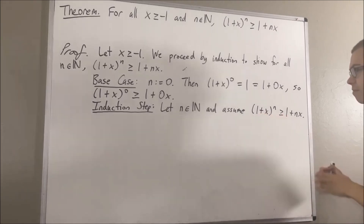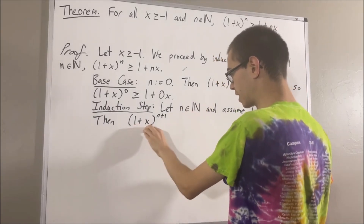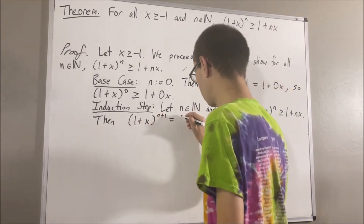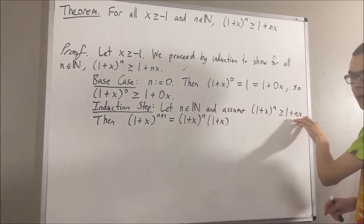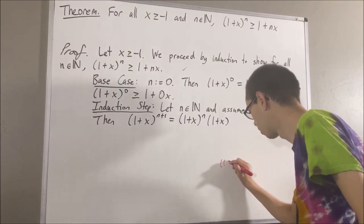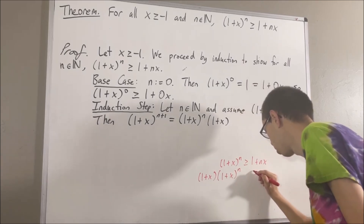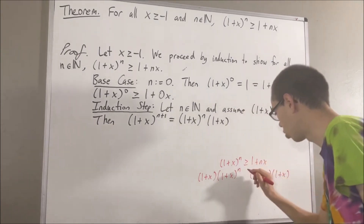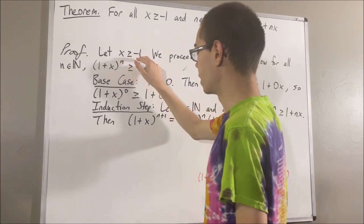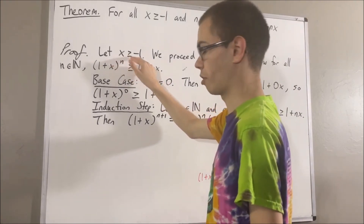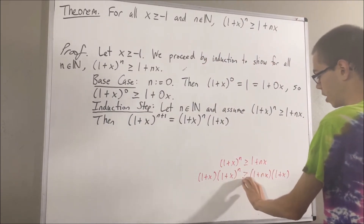So, let me start out by writing the left-hand side. Using our rules of exponents, we know that this equals 1 plus x to the power of n, times 1 plus x. Notice we see 1 plus x to the power of n, so maybe we should use our induction hypothesis. If we take this inequality and multiply 1 plus x on both sides, the sign of the inequality will remain the same. The reason why is because, since x is greater than or equal to negative 1, adding 1 to both sides gives us that 1 plus x is greater than or equal to 0. And because 1 plus x is greater than or equal to 0, when we multiply it on both sides, that's why the sign of the inequality remains the same.